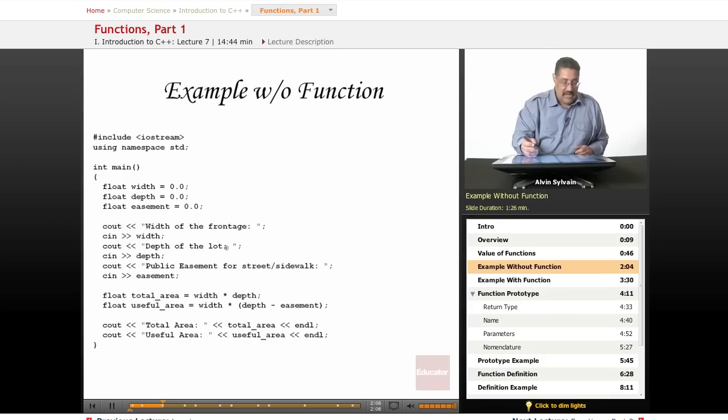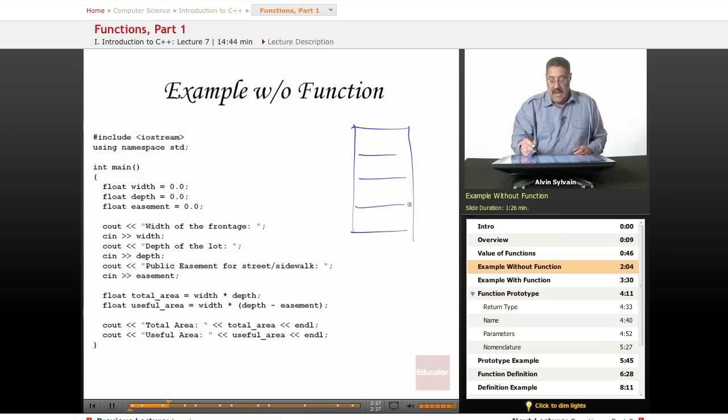Here's a quick example of some code that has no functions. We're defining width, depth, and easement. This is a real estate situation where you have a street divided into lots. The depth of the lot is this direction, the width of each lot is this direction.